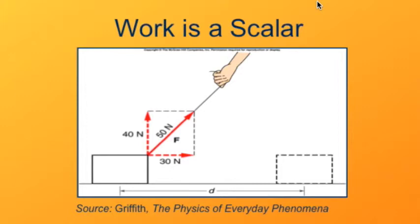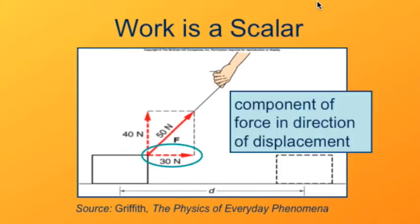The force has a magnitude of 50 newtons, but only 30 newtons of it counts toward the work because only 30 newtons is the component in the direction of the displacement. So it turns out that what's actually important for calculating the work done by a force is the component of the force in the direction of the displacement.